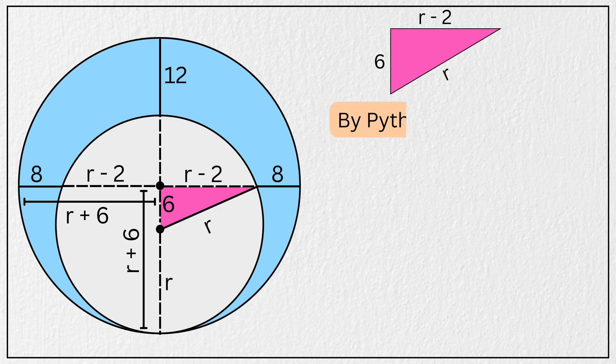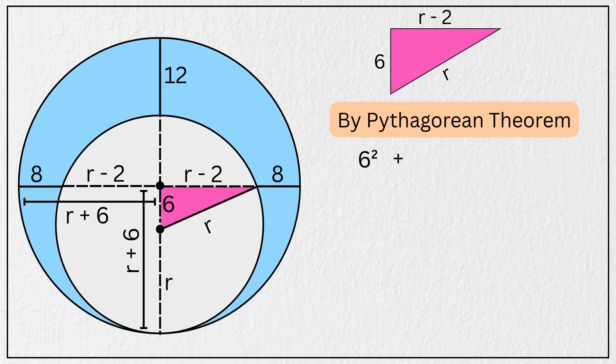So using everyone's favorite, the Pythagorean theorem, we get 6 squared plus the quantity r minus 2 squared is equal to r squared. Now let's simplify this step by step.